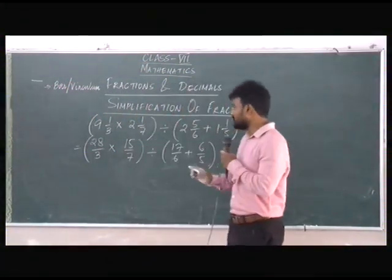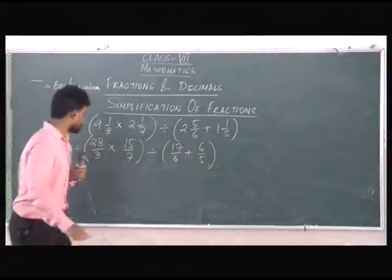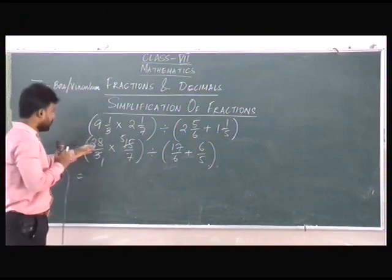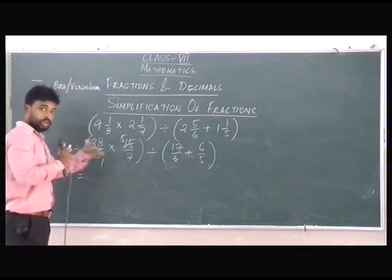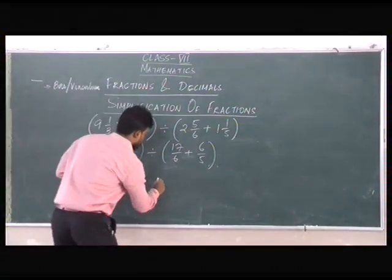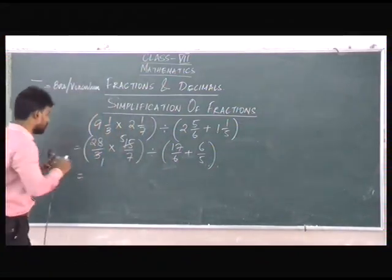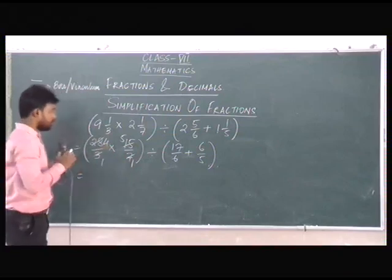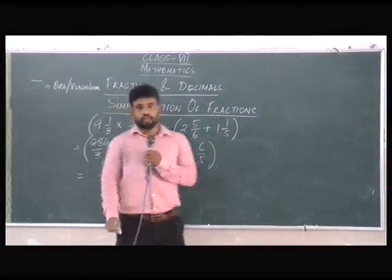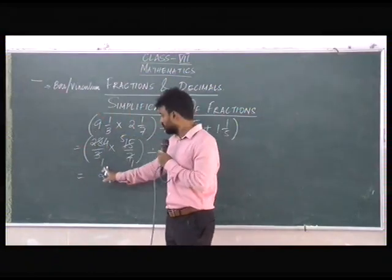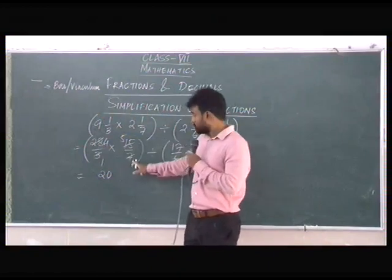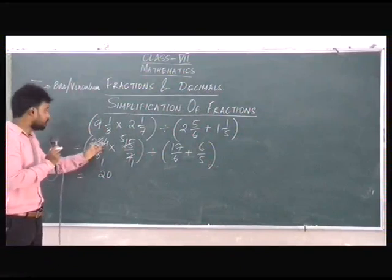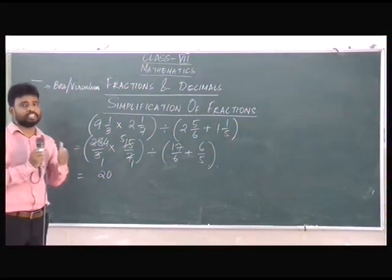In the next step, we'll solve the brackets separately. We cancel 15 with 3: 3 ones are 3, 3 fives are 15. And we cancel 28 with 7: 7 ones are 7, 7 fours are 28. So we have 4 and 5 on the numerator and 1 on the denominator. We multiply 4 with 5, that gives 20, or 20 by 1, which we can simply write as 20.